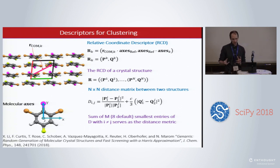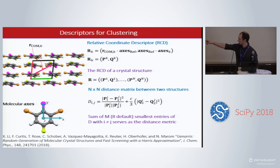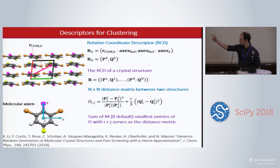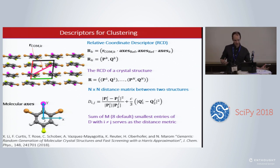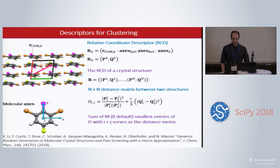To compute a distance between two structures, you compute a distance matrix D by taking the normalized L2 norm squared of the P's and Q's. C scales the relative importance of the difference in position versus the difference in orientation. You then sum up the M smallest entries of D to get the distance between two structures. There is some arbitrariness to this, but there's some arbitrariness to any distance definition.